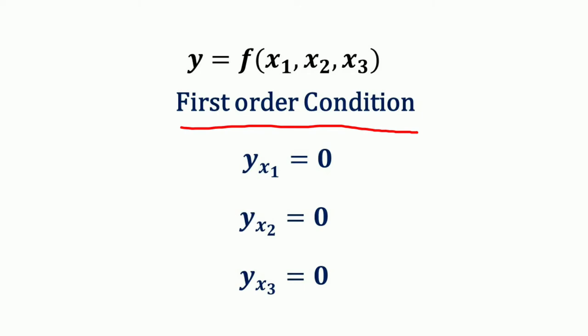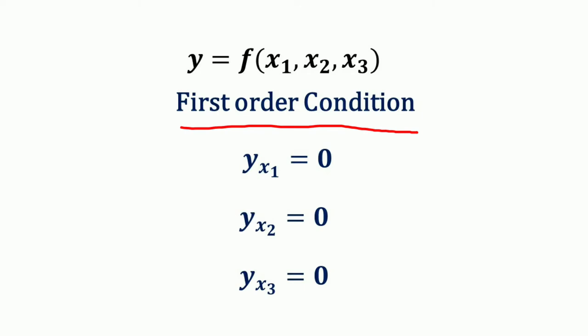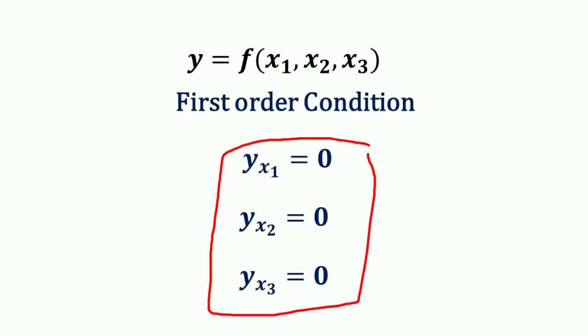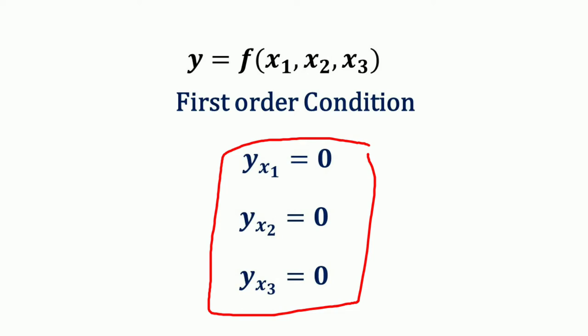That means we have to take the partial derivative with respect to x1, x2, and x3, and set each equal to zero. If you solve these first order partial derivatives simultaneously, then we will get the critical values, that is the values of x1, x2, and x3.